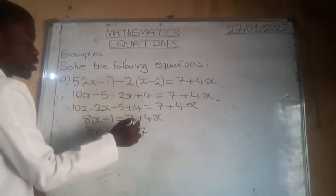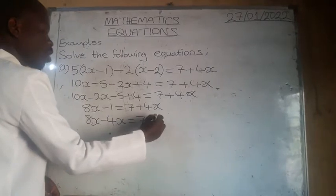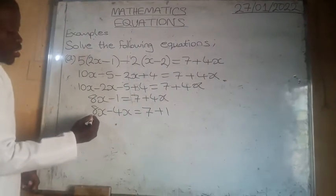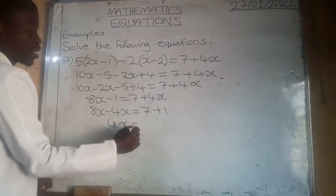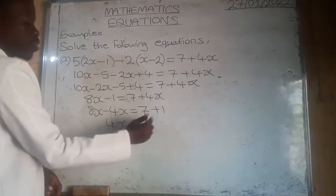Then negative 1, when it crosses the equal sign, it will become positive 1. So 8x minus 4x is 4x. Then 7 plus 1 is 8.